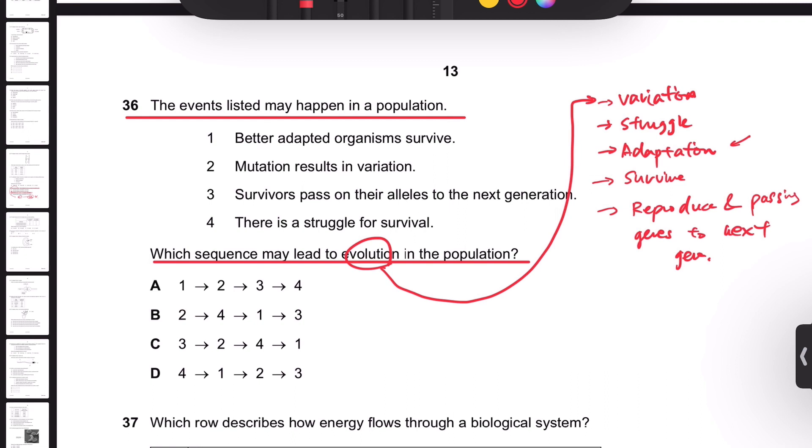Okay, so variation is first one. And then the struggle comes. Those who survived must be the better adapted ones. So here we have to decide—the struggle happens first, and then some who can adapt better will survive.